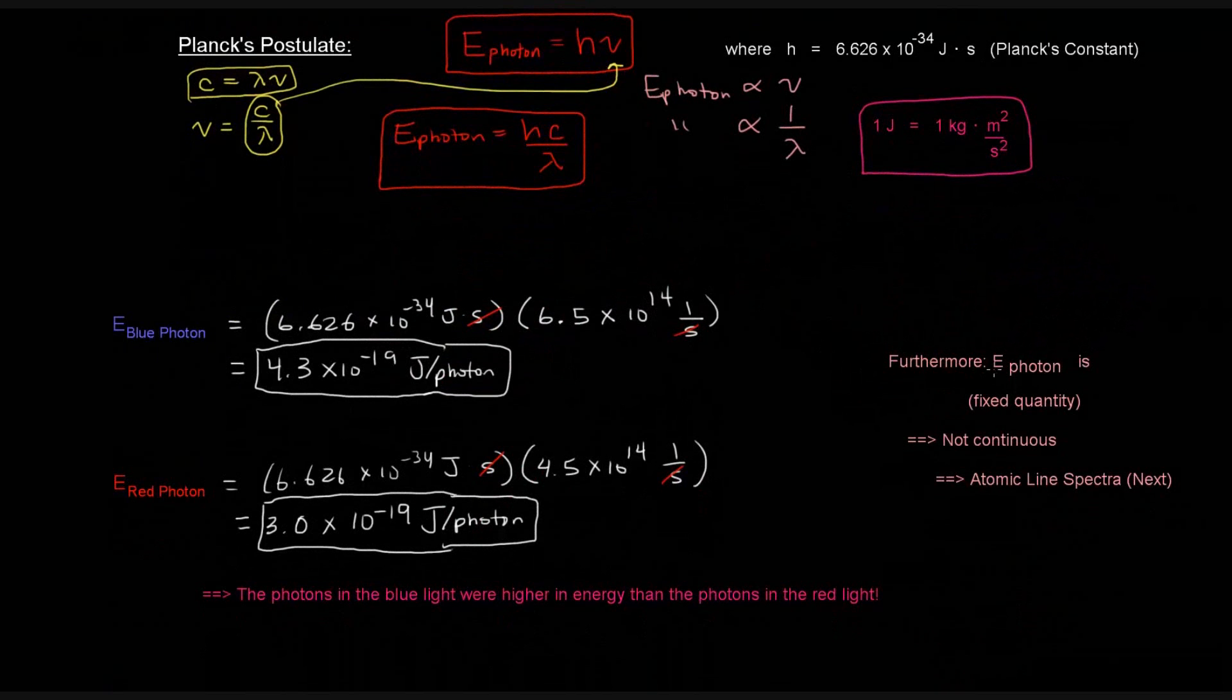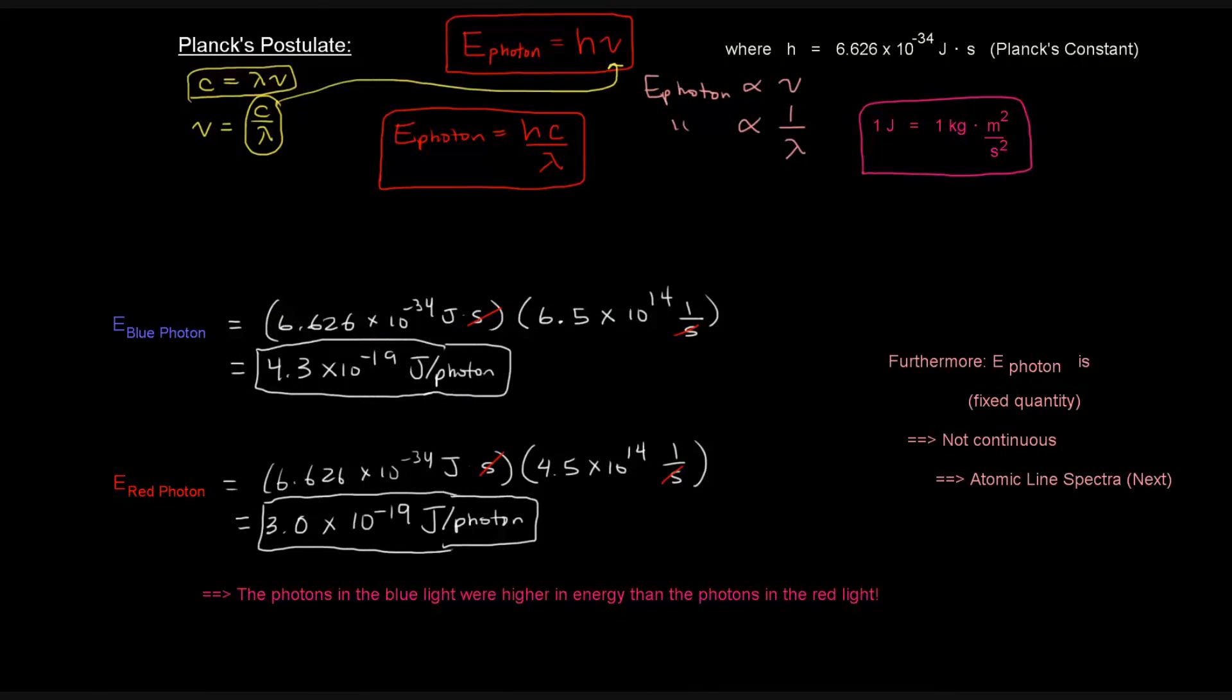So furthermore, the energy of a photon is said to be quantized, which means that it's got a fixed energy. It's a fixed quantity. If you have a certain frequency, that is going to be associated with a certain energy. And that energy is fixed. It's not continuous. So this is an important concept for the idea of atomic line spectra, which is coming up in the next series.